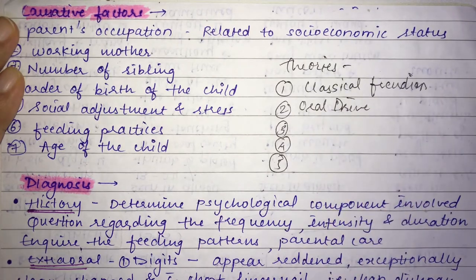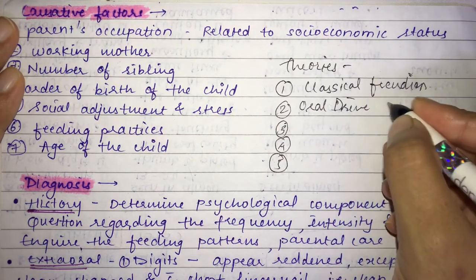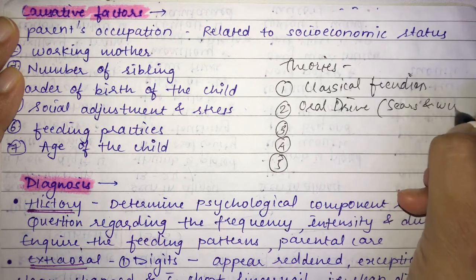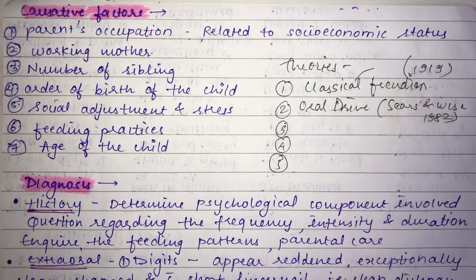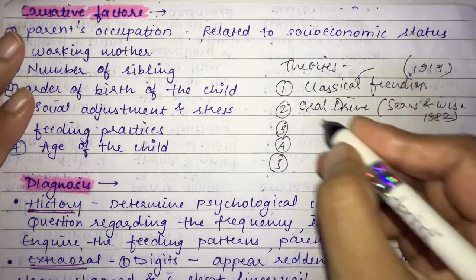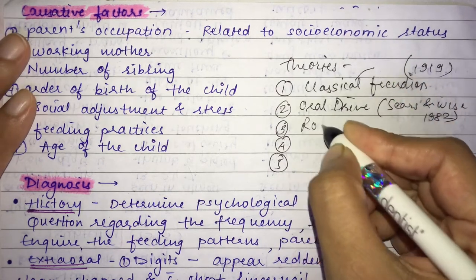The Oral Drive Theory was given by Sears and Weiss in 1982. It states that excessive or prolonged nursing of the child leads the child to put the thumb in the mouth, developing into thumb sucking.